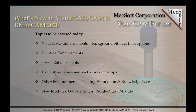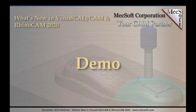Today's topics include: VisualCAD enhancements, then 2.5-axis CAM enhancements common to both VisualCAD/CAM and RhinoCAM, followed by 3-axis and usability enhancements — including fixtures, setups, and knowledge bases. Finally, the most exciting part: three new modules being released with 2020 — the G-Code Editor, a Profile Nesting module, and the Mill-Turn module which is moving from beta to full product release.